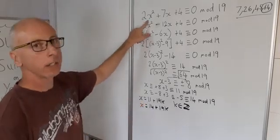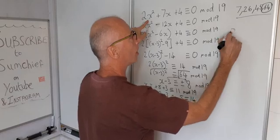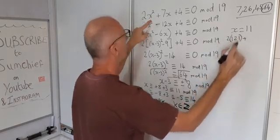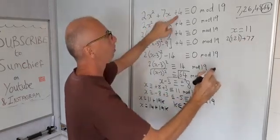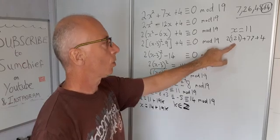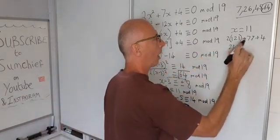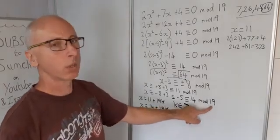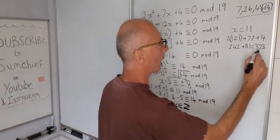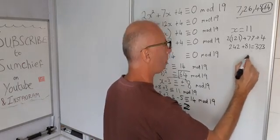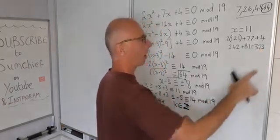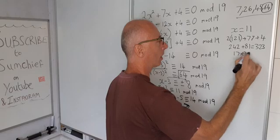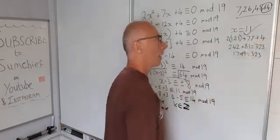If you've got time we can just plug that in to check our answers. For x = 11: 11² is 121 × 2, 7 × 11 is 77, plus 4. So 2 × 121 is 242, and 77 + 4 is 81, so that equals 323. We're dealing in modulo 19, so how many 19s do we get into this? We know that it's going to end in a 7 because multiplying by 9 to get a 3 at the end, a 7 is going to be a good way to find that. So 17 × 19 = 323. Therefore x = 11 is a good solution.